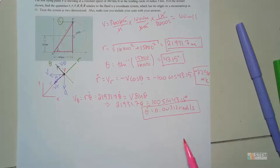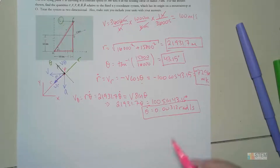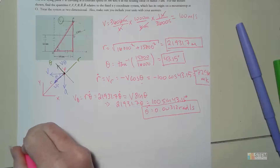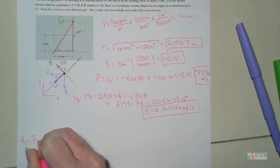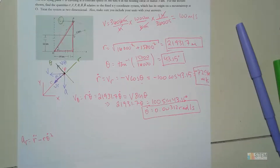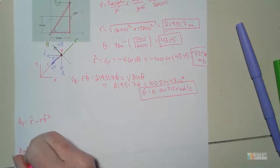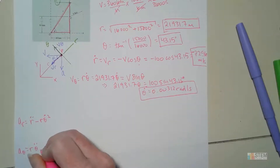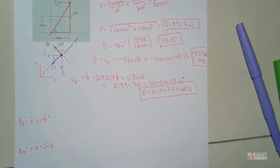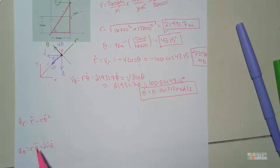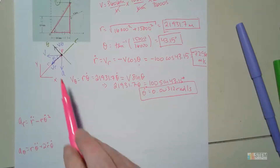That takes care of r, θ, ṙ, and θ̇. Now I need the second derivatives. To get those we use acceleration. Remember: aᵣ = r̈ − rθ̇² and a_θ = rθ̈ + 2ṙθ̇. Those are the polar coordinate definitions. I have r̈ in the first equation and θ̈ in the second.